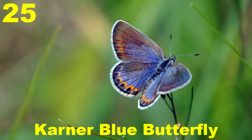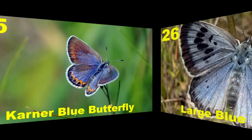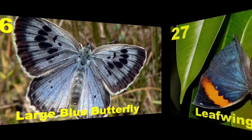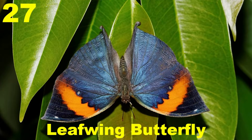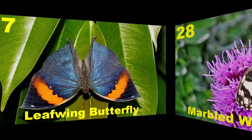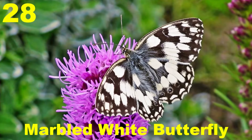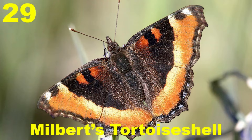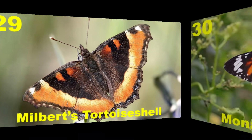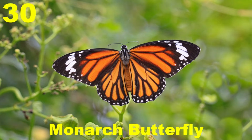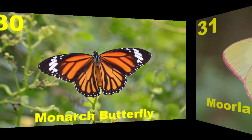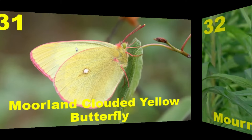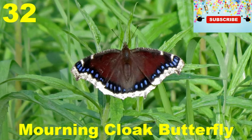Cornered blue butterfly. Large blue butterfly. Leaf wing butterfly. Marbled white butterfly. Milbert's Tortoiseshell. Moon egg butterfly. Clouded yellow butterfly. Mourning cloak butterfly.